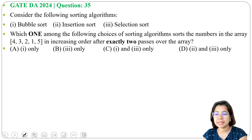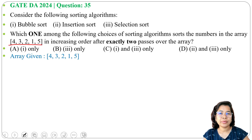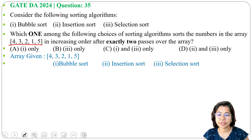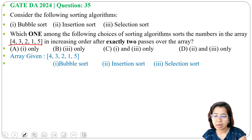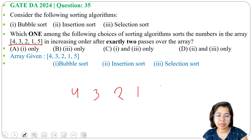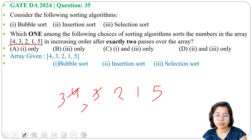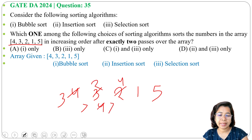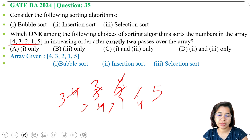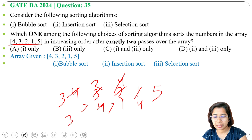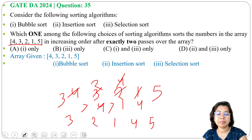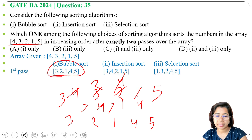Let's run bubble sort, insertion sort, and selection sort on the array simultaneously for comparison. For bubble sort on array 4 3 2 1 5: is 4 greater than 3? Yes, swap — giving 3 4. Is 4 greater than 2? Yes, swap. Is 4 greater than 1? Yes, swap. Is 4 greater than 5? No, stop. After pass 1, bubble sort gives 3 2 1 4 5.